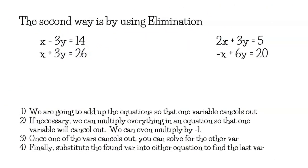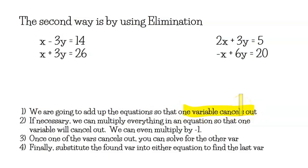The second algebraic method is called elimination. We stack the equations and add them so that one variable cancels out. If necessary, we can multiply an entire equation by a constant. Once a variable cancels, solve for the remaining variable, then substitute back into one of the original equations.